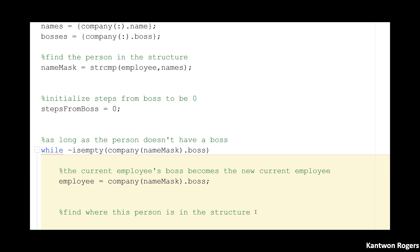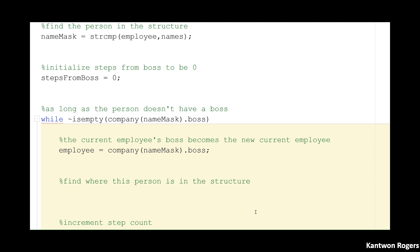So I'm taking that boss and assigning it to my new employee. So now I want to figure out where is this new person, this boss, where are they at inside of my structure array? Because it's not guaranteed that they're in a certain order. So where are they at inside of my structure array?